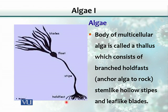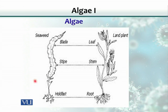So holdfast is a kind of root, stipe is a stem, and leaves are called blades. This is a comparison between a typical plant and algae — in a typical plant the root is called holdfast in algae, stem is stipe, and leaves are blades.